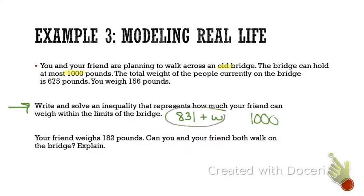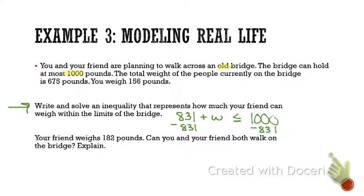Does this combination of weight need to be less than or greater than 1,000? It's got to be less than. But what if they weigh exactly 1,000 pounds? You're pushing it, but you should still be okay as long as you don't go over. So it can be equal to as well. Now I just solve the inequality, and W is less than or equal to 169 pounds — that's how much your friend can weigh.